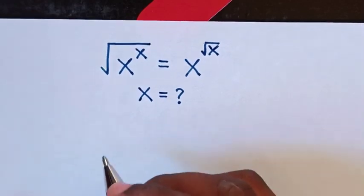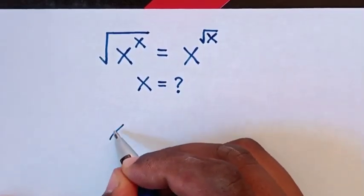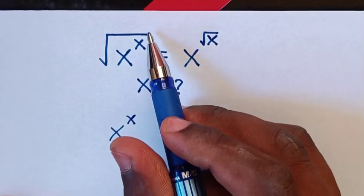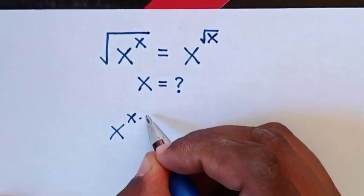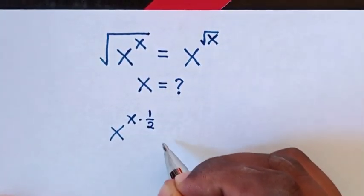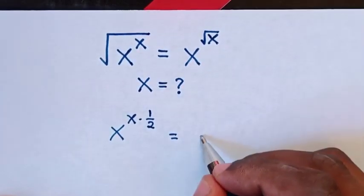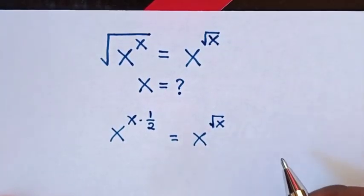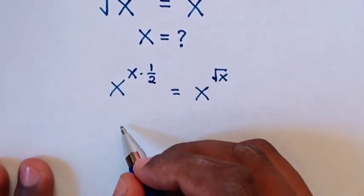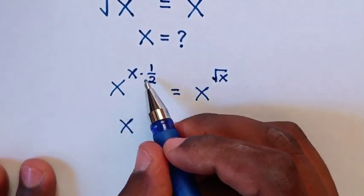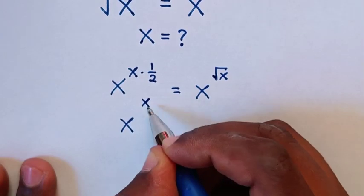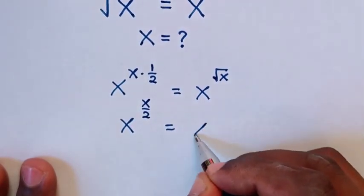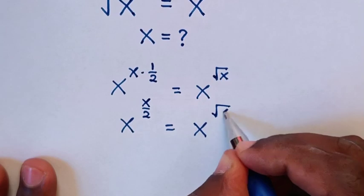So first from here we have x power x. Then we have square root, and square root is the same as power of a half. So x times power of a half is equal to x power square root of x, which gives us x power x over 2 is equal to x power square root of x.